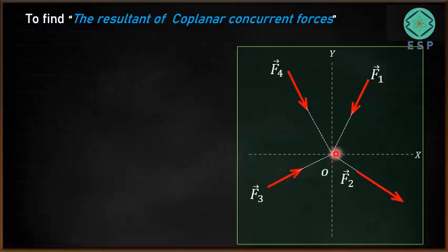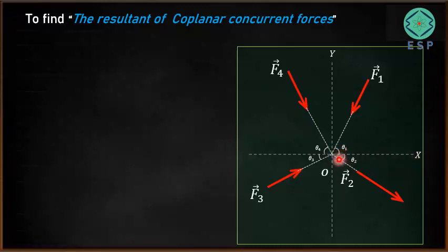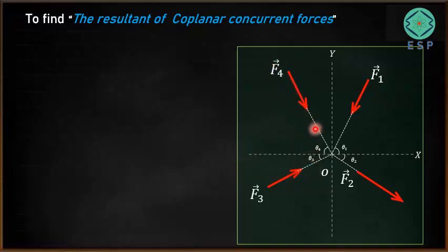This is a good example of coplanar concurrent forces. Force F1 makes an acute angle of theta 1 with respect to the X axis. Similarly, F2 is making an acute angle of theta 2 with the X axis. F3 makes an acute angle of theta 3, and F4 is making an acute angle of theta 4 with respect to the X axis. We have shown all the forces and their corresponding angles with respect to the X axis.